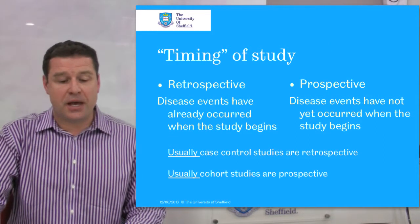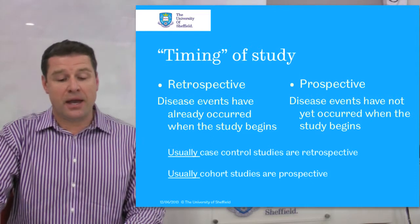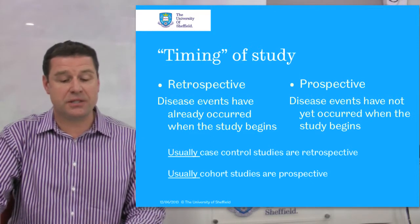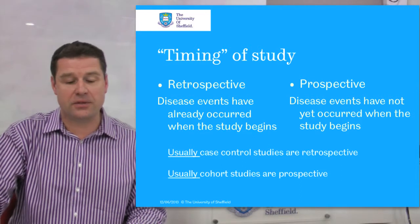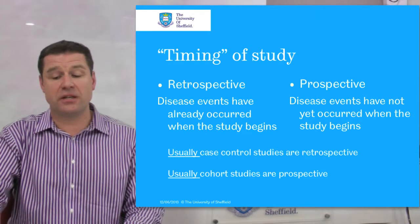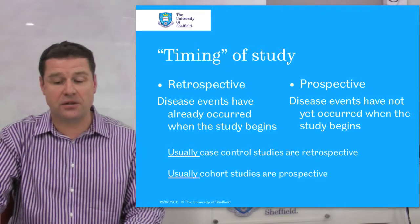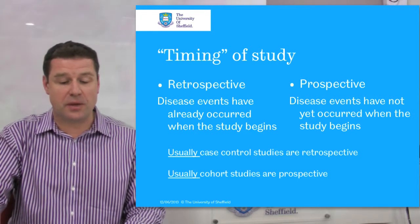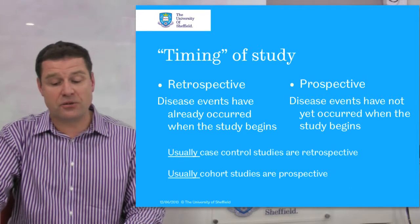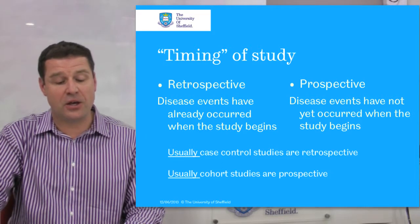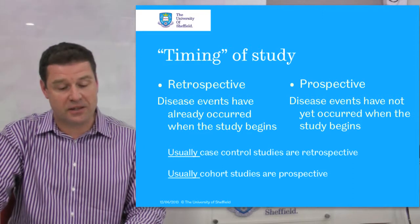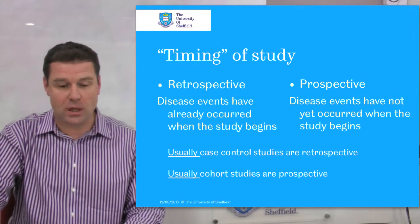Similar to cohort studies, case control studies can be retrospective — disease events have already occurred when the study design begins — or prospective — disease events have not yet occurred when the study begins. Usually case control studies are retrospective, and usually cohort studies are prospective. I stress usually, not always.